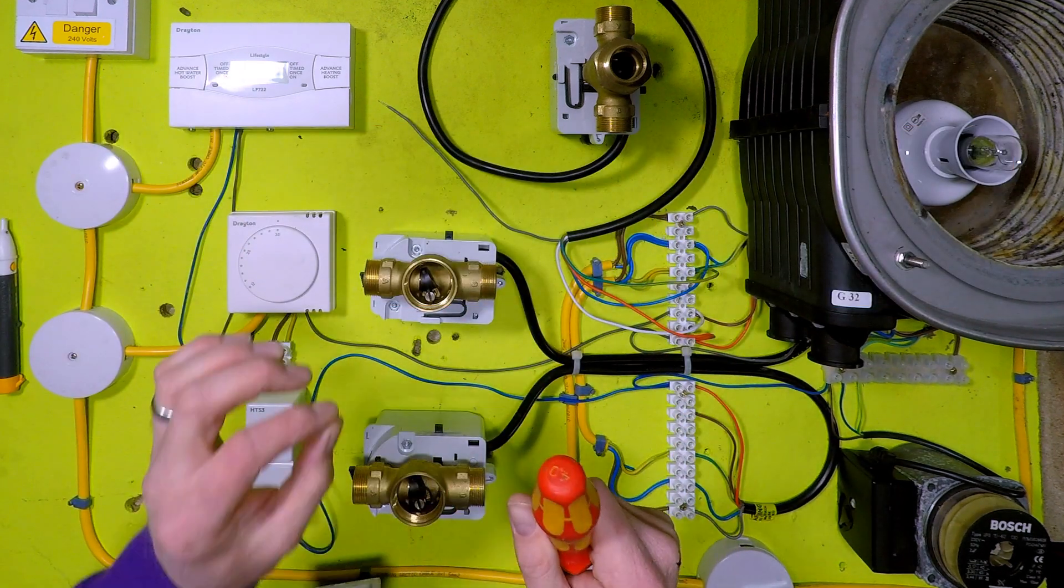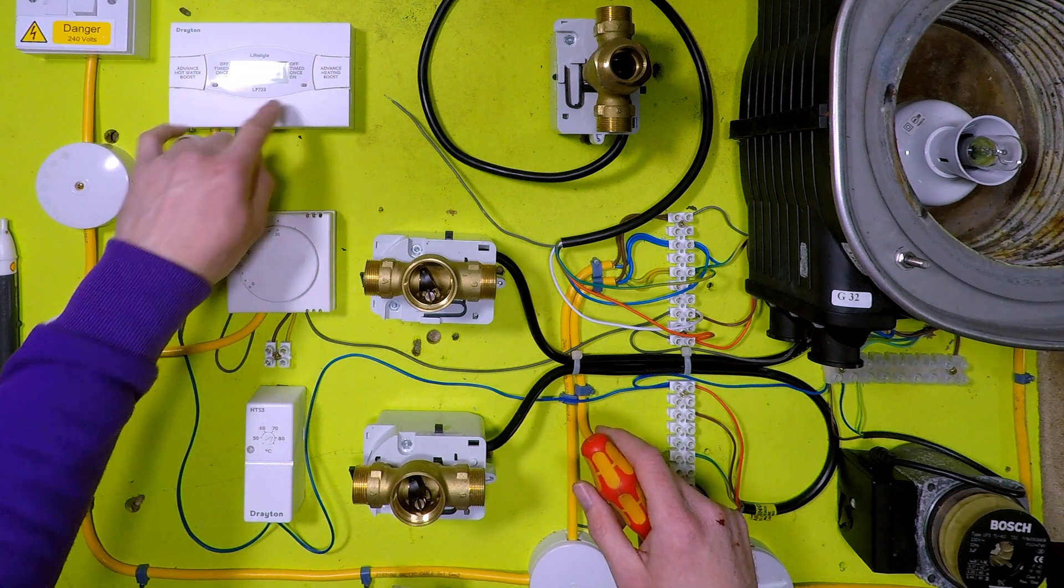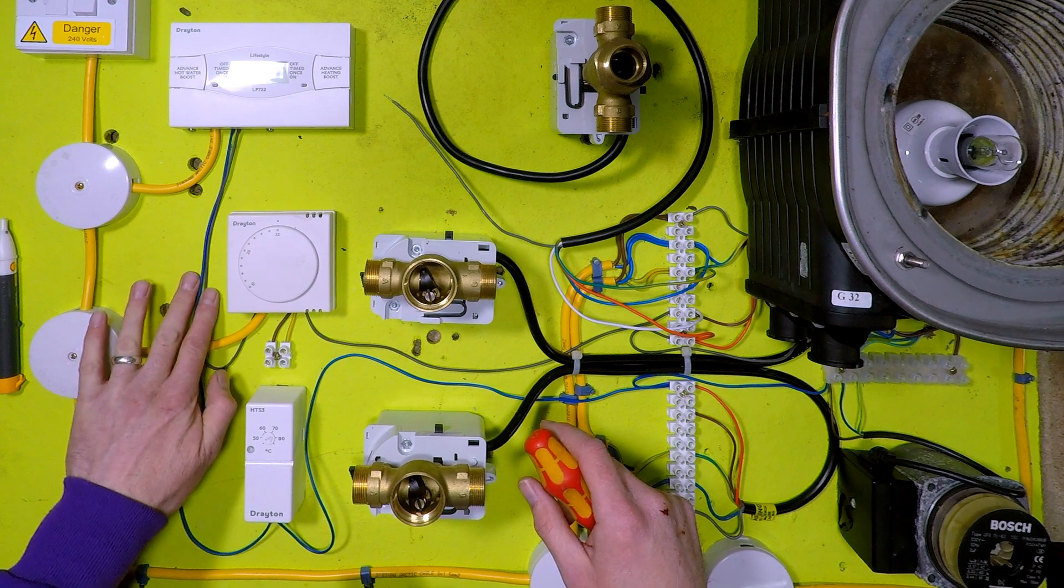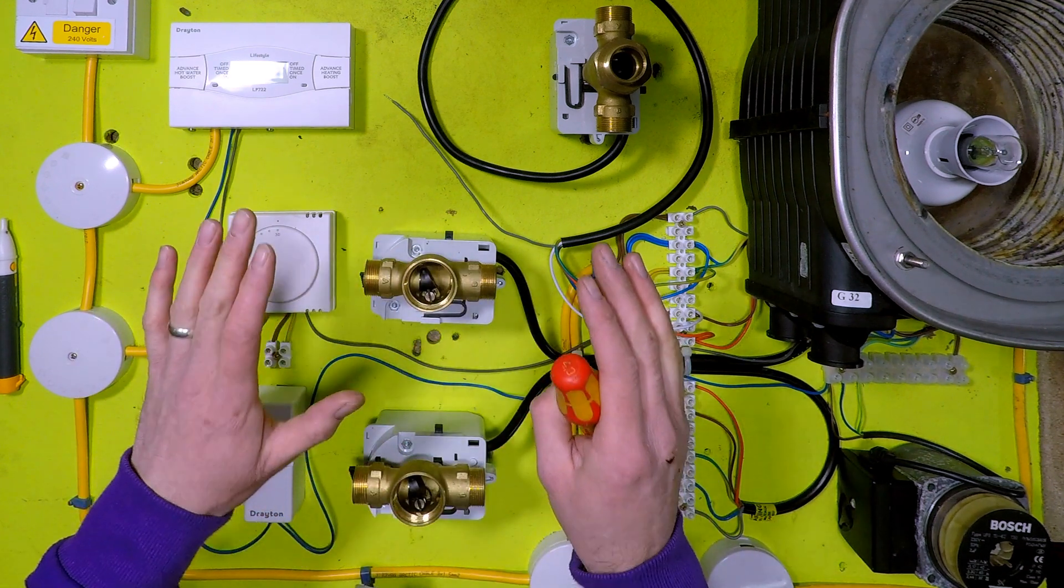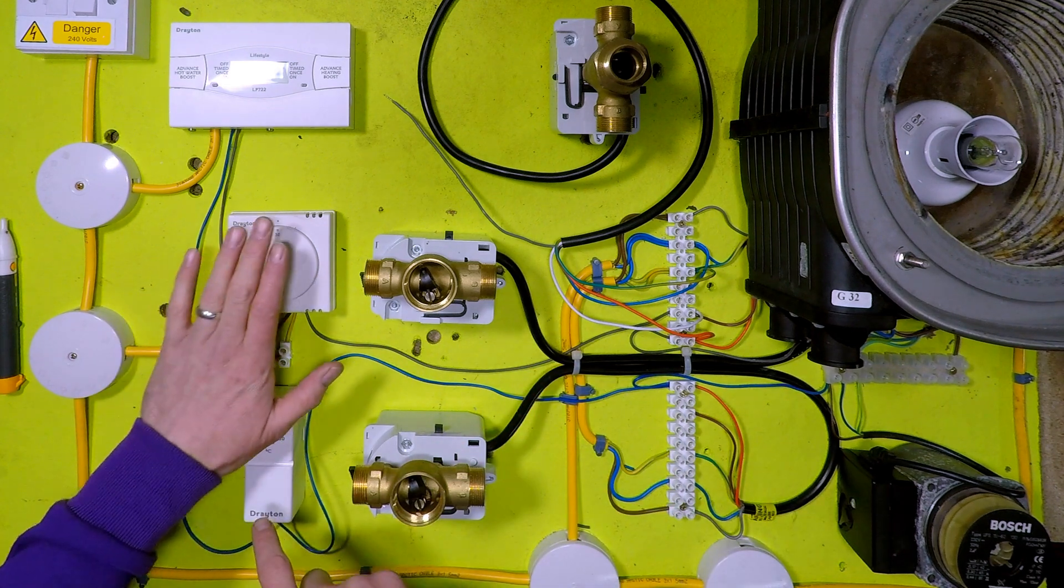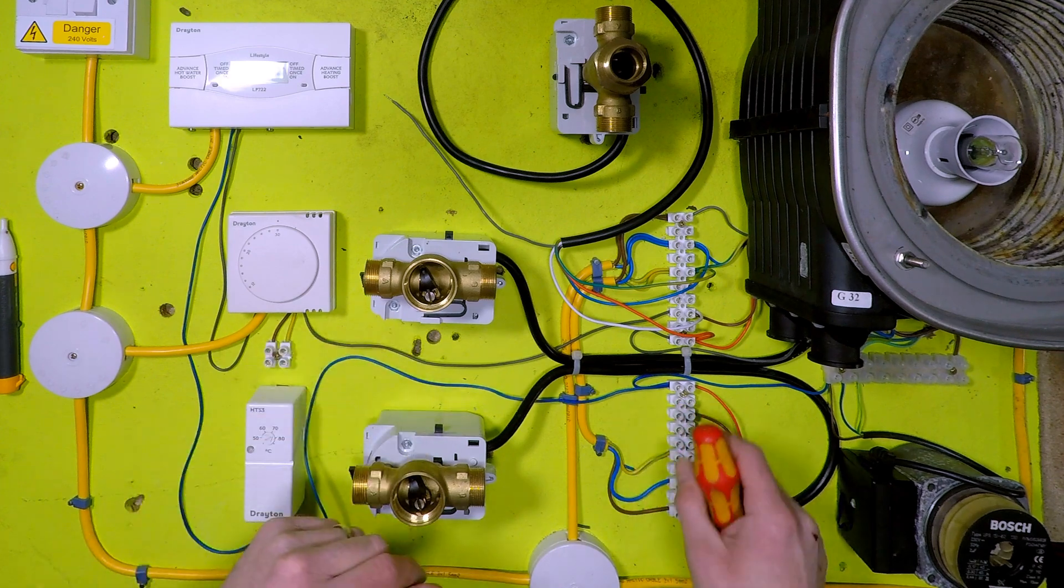So that was hot water only. Now we're going to go on to heating and water. What happens is the power comes - you have both of these wires have power, okay? Goes into both cylinder stats. Now this is when there's a demand. Heating and water are both demanding. Cylinder stat and room stat want heat. The power then comes from the cylinder stat and the room stat.